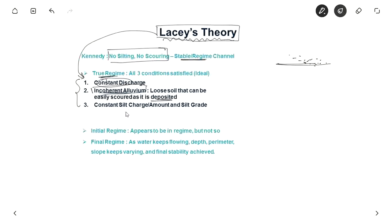And also there should be constant silt amount. And the silt grade also should be constant, that is the size of the particles. So this is a very ideal condition which cannot be achieved. So he differentiated them into two types of regime. One is initial regime and other is final regime.